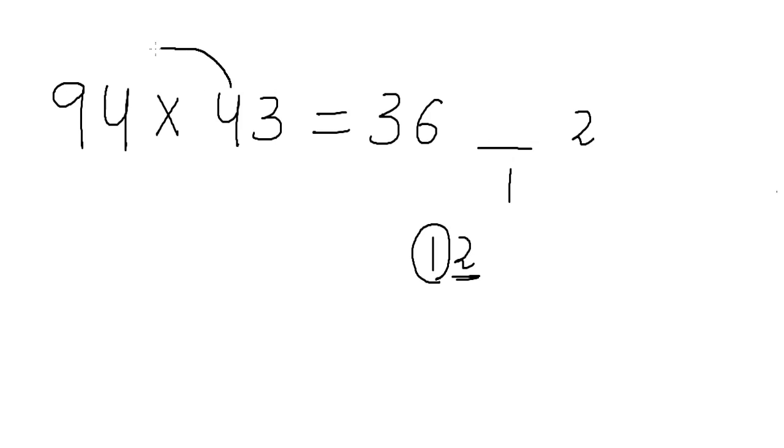Now we multiply in this fashion 4 into 4 plus 3 into 9. So 4 into 4 is 16. 16 plus 3 into 9 is 27. 27 plus 16 is 43. 43 and since there is a 1 here we add that also. So we get the answer as 44.